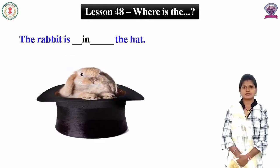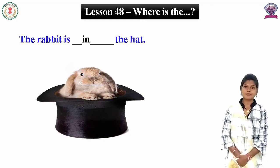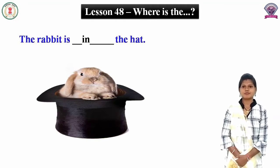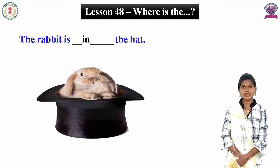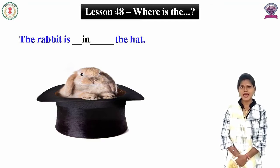Look at this picture. इस picture में आपको क्या दिखाई दे रहा है? Where is the rabbit? Rabbit कहाँ है? तो rabbit hat के अंदर है। जब भी कोई वस्तु किसी चीज के अंदर होती है तो हम 'in' का प्रयोग करते हैं। चलिए sentence को complete करते हैं — the rabbit is in the hat.